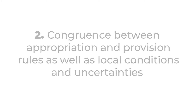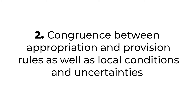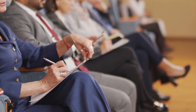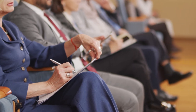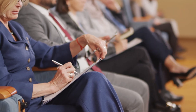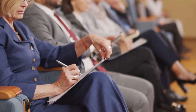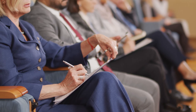2. Congruence between appropriation and provision rules, as well as local conditions and uncertainties. This relates to understanding the difficulty in the implementation of new water loops concerning the existing regulations and local context.